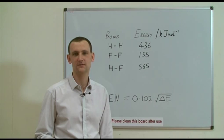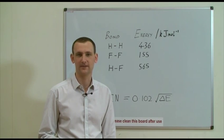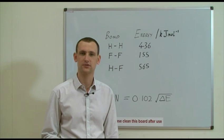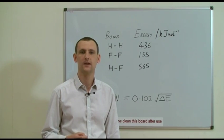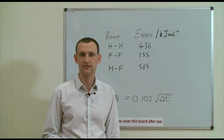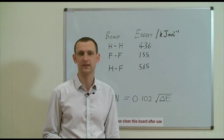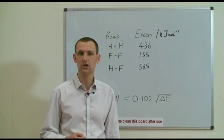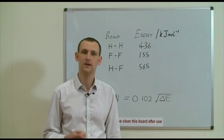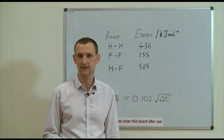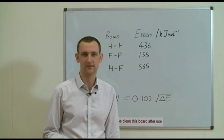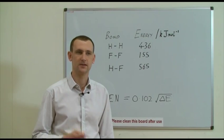Electronegativity is a concept first devised by the American chemist Linus Pauling, and defined by him as the power of an atom in a molecule to attract electrons towards itself. This is the idea that in a covalent bond, electrons are only shared exactly equally when the two atoms are the same, such as in a fluorine-fluorine bond or a carbon-carbon bond. If the bond is heteroatomic — meaning it contains two different types of atom — then the bond will be polar to some extent, with one atom having a greater share of the electrons than the other.